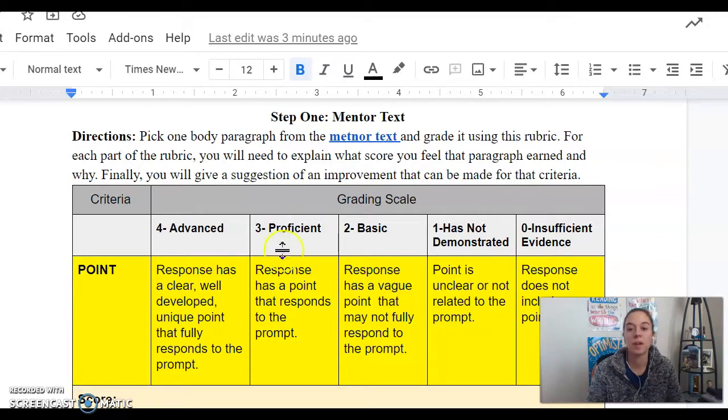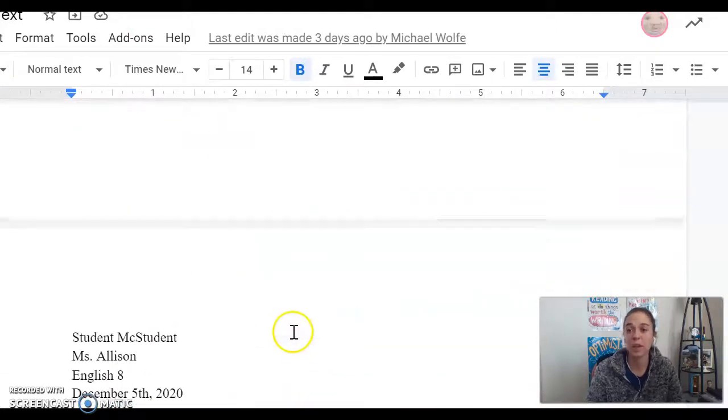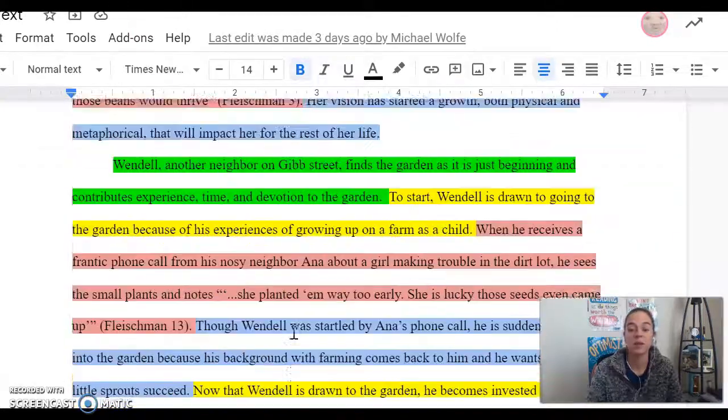So, directions here is you're going to pick a body paragraph from the mentor text and grade it using the rubric. For each part of the rubric, you will need to explain what score you feel that paragraph earned and why. And finally, you'll give a suggestion of improvement that can be made. So what I'm going to do is I'm going to go to the mentor text. We're looking at body paragraphs, right? So I'm going to pick one.